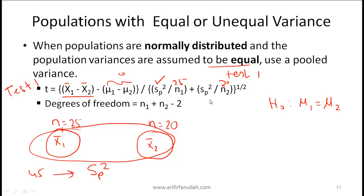Based on this calculation we arrive at a t-statistic — say 3.5 for illustration. It is unlikely you will need to perform this full calculation on an exam due to the time required, but you should understand all the variables. The degrees of freedom for this pooled test is n1 plus n2 minus 2.